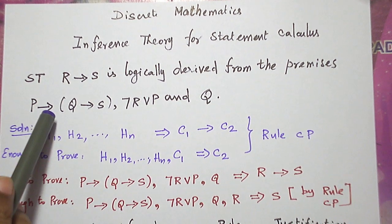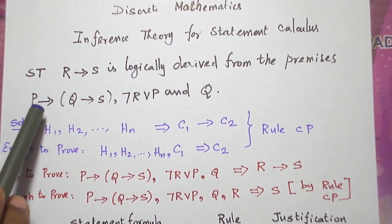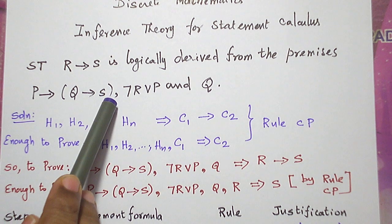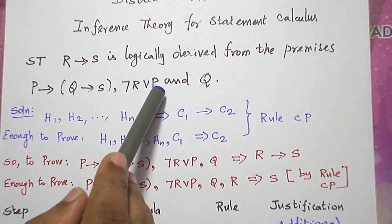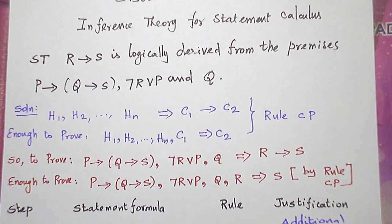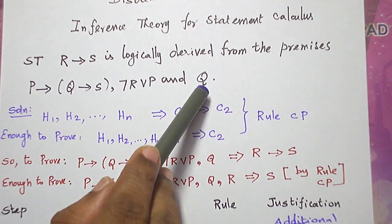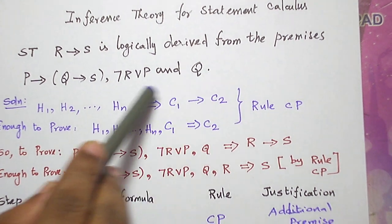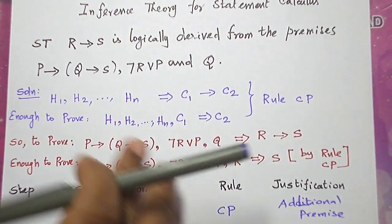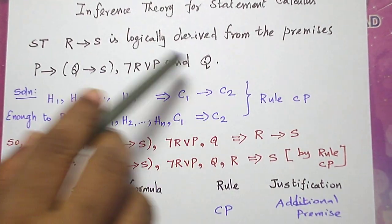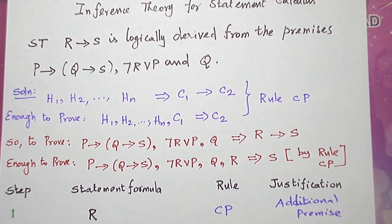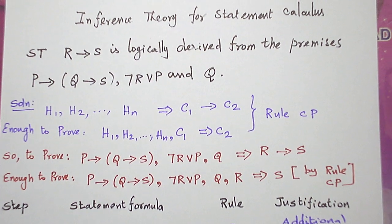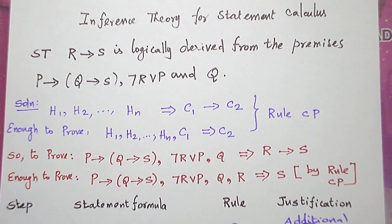We are given three premises: P conditional S is the first premise, negation R or P is the second premise, Q is the third premise. Based on these premises we have to conclude the statement R conditional S.